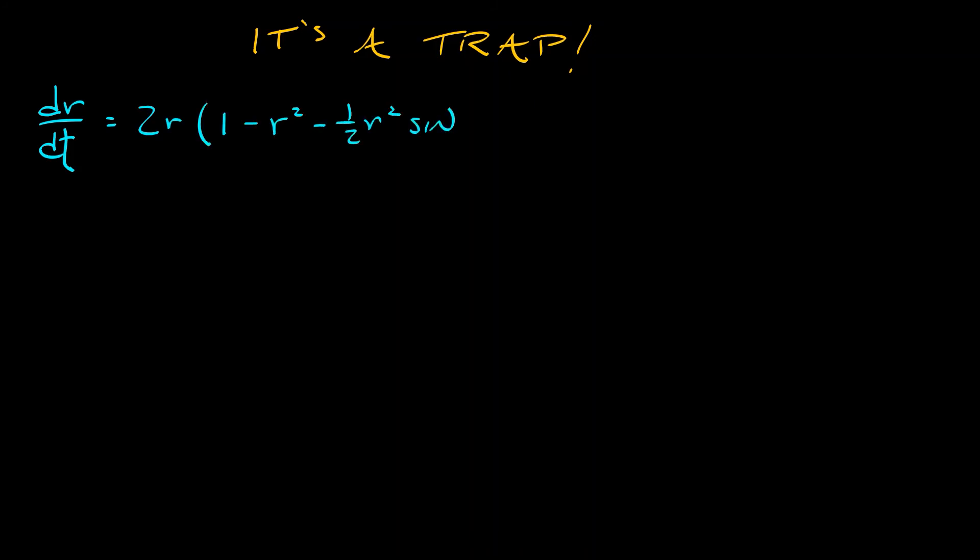I claim that when r is sufficiently small, let's say r is one half, then those higher order terms with the negative sign in front of them, they're really small, small enough so that the linear term dominates and dr/dt is positive.